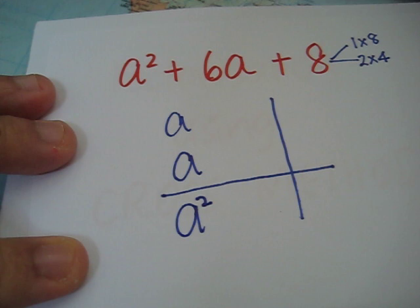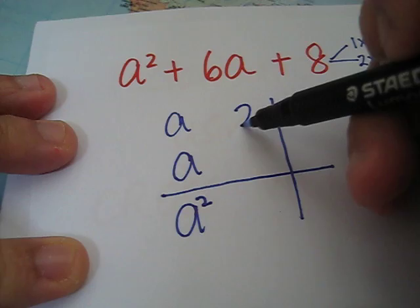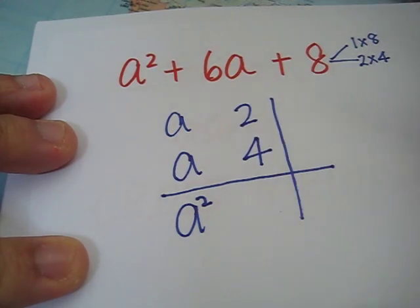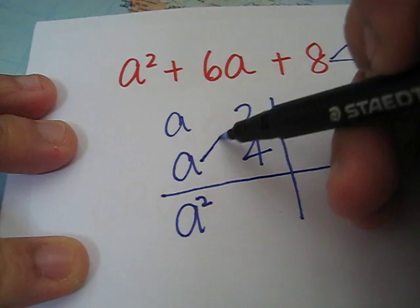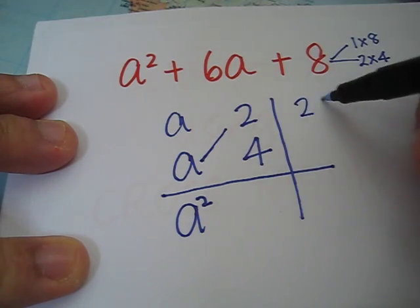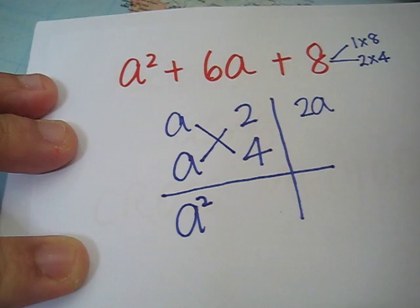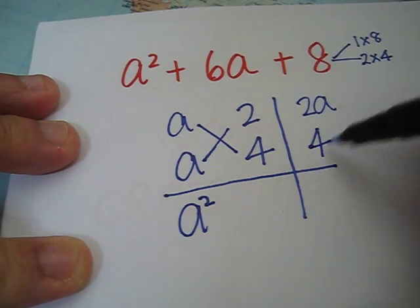Compare these two terms. This is likely to result as 6 when we sum up the numbers. So let's try 2 and 4. a times 2 will give us 2a. a times 4 will give us 4a.